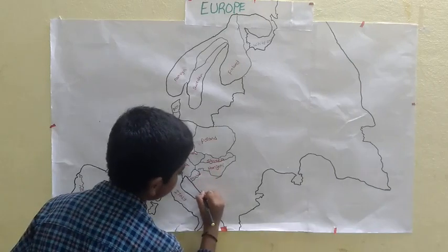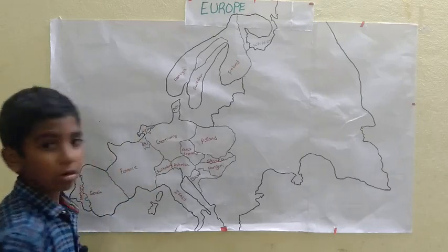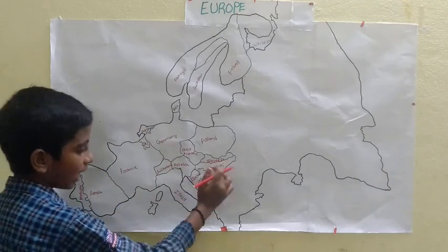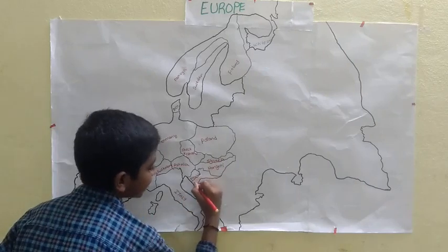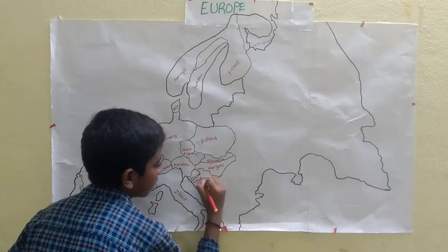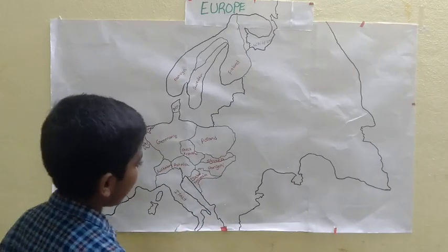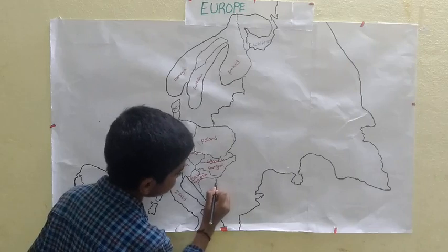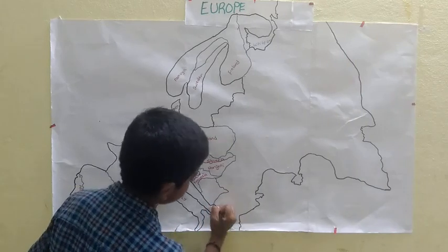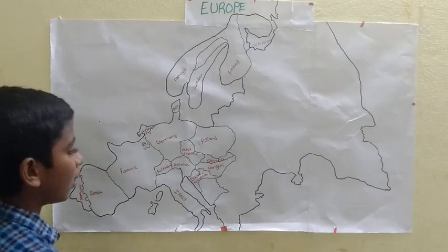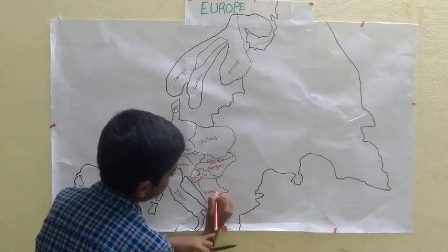Next we go to Croatia. Below Hungary there is a small country — Croatia. Below Croatia we see Bosnia.